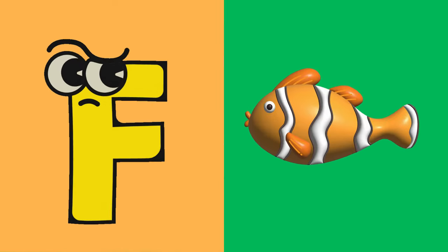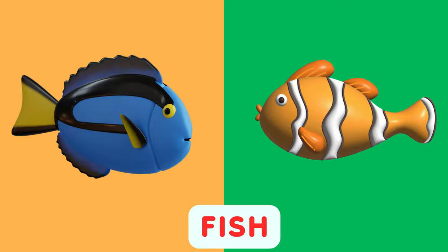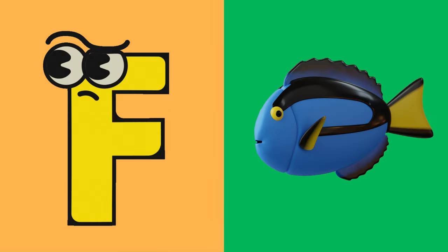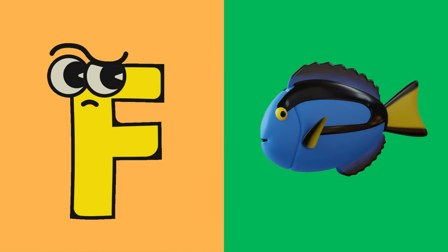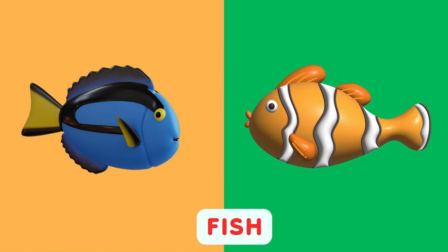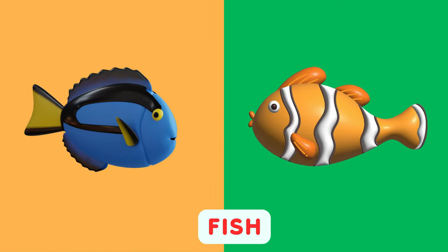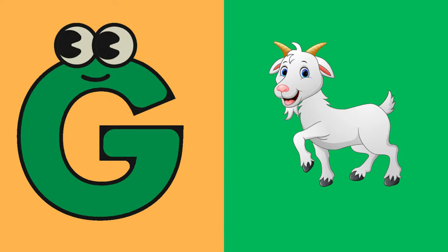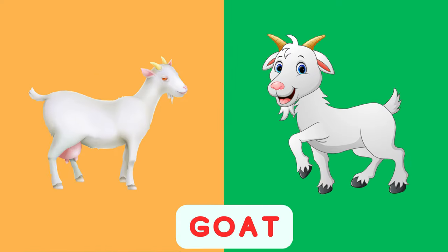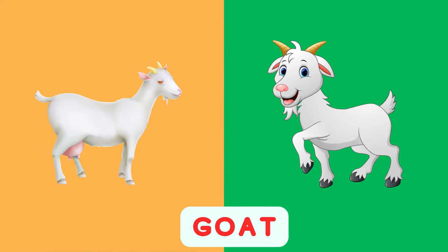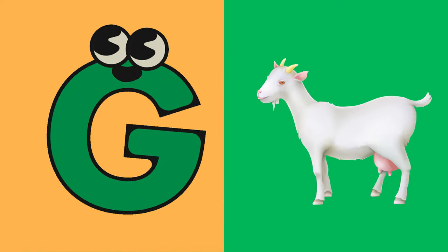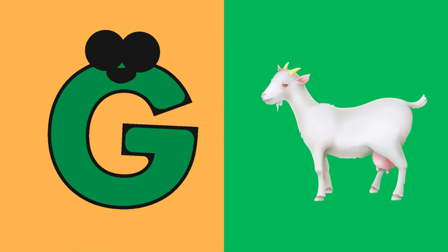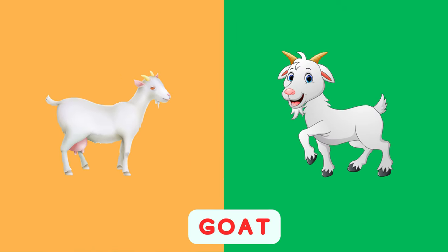F is for Fish, F, F, Fish. F is for Fish, F, F. G is for Goat, G, G, Goat. G is for Goat, G, G, G.